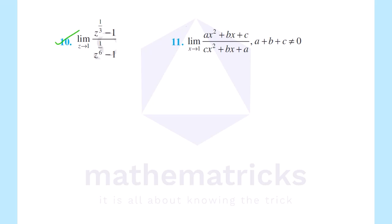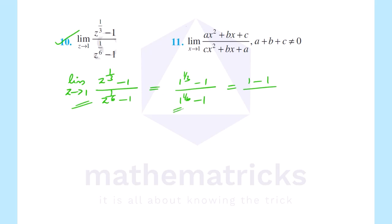Limit z tends to 1, z raise to 1 by 3 minus 1 divided by z raise to 1 by 6 minus 1. First, substituting z = 1: 1 raise to 1 by 3 minus 1 divided by 1 raise to 1 by 6 minus 1, which gives 1 minus 1 divided by 1 minus 1, equal to 0 by 0. Here we have 0 by 0 form.